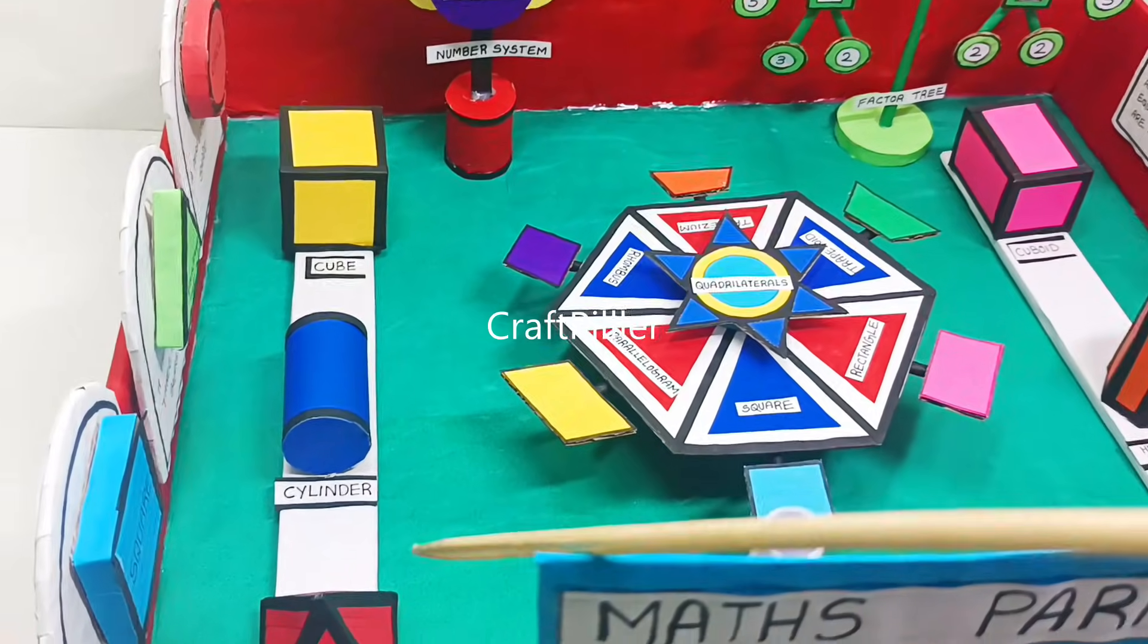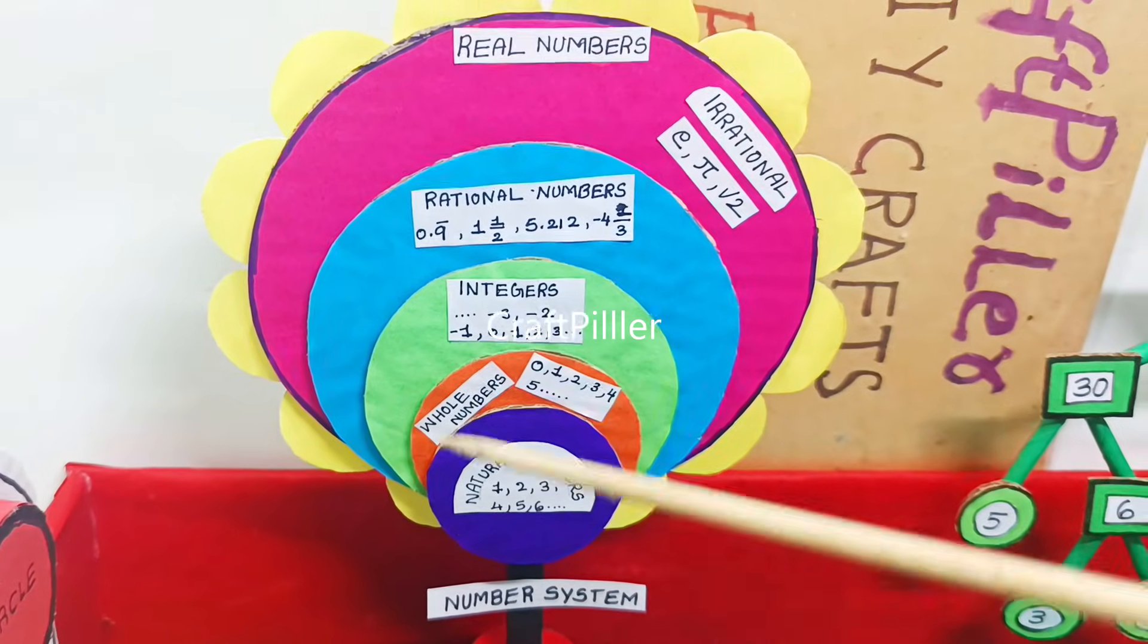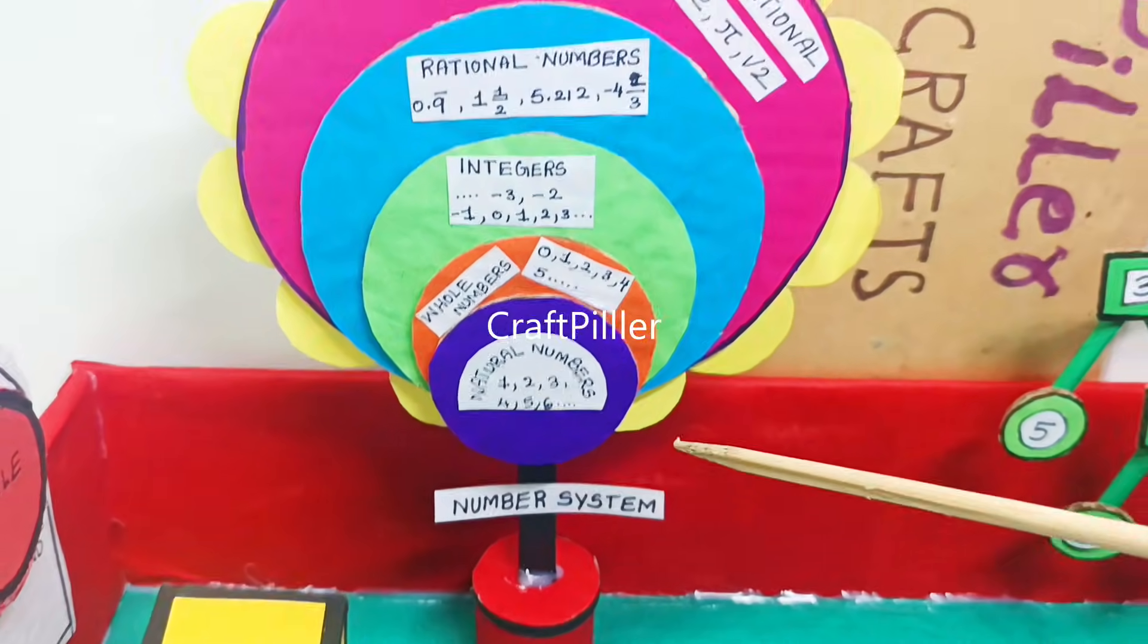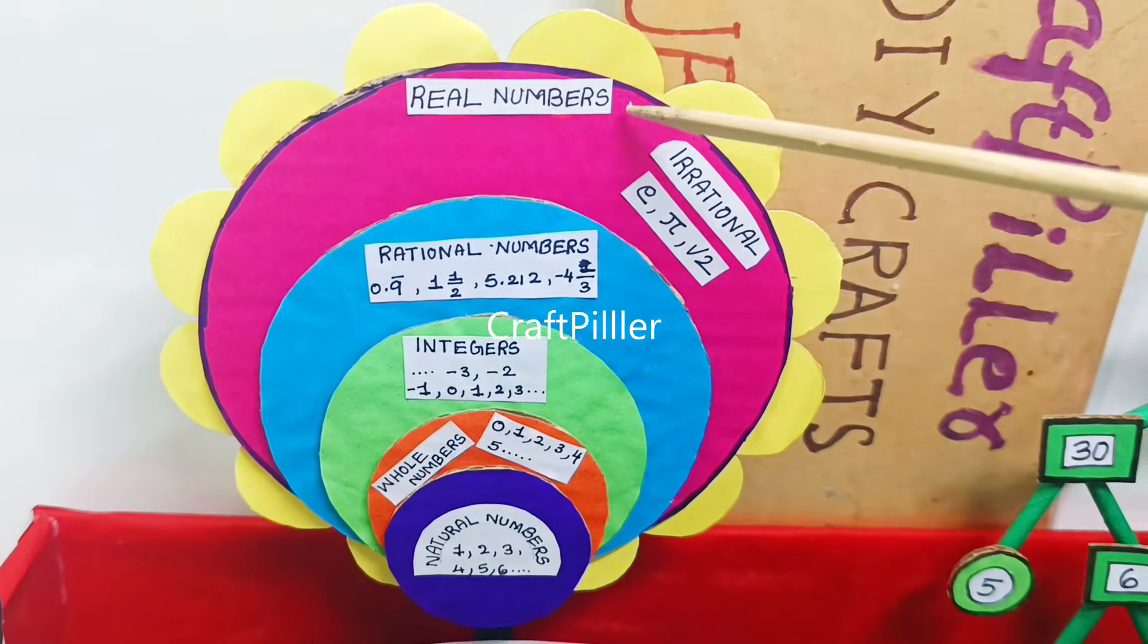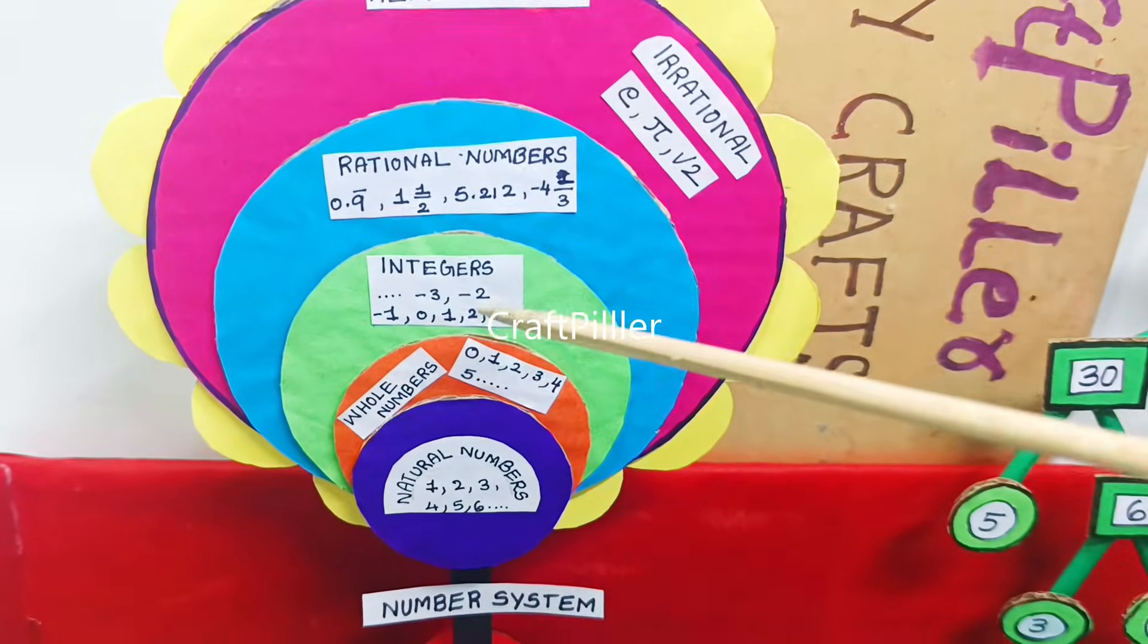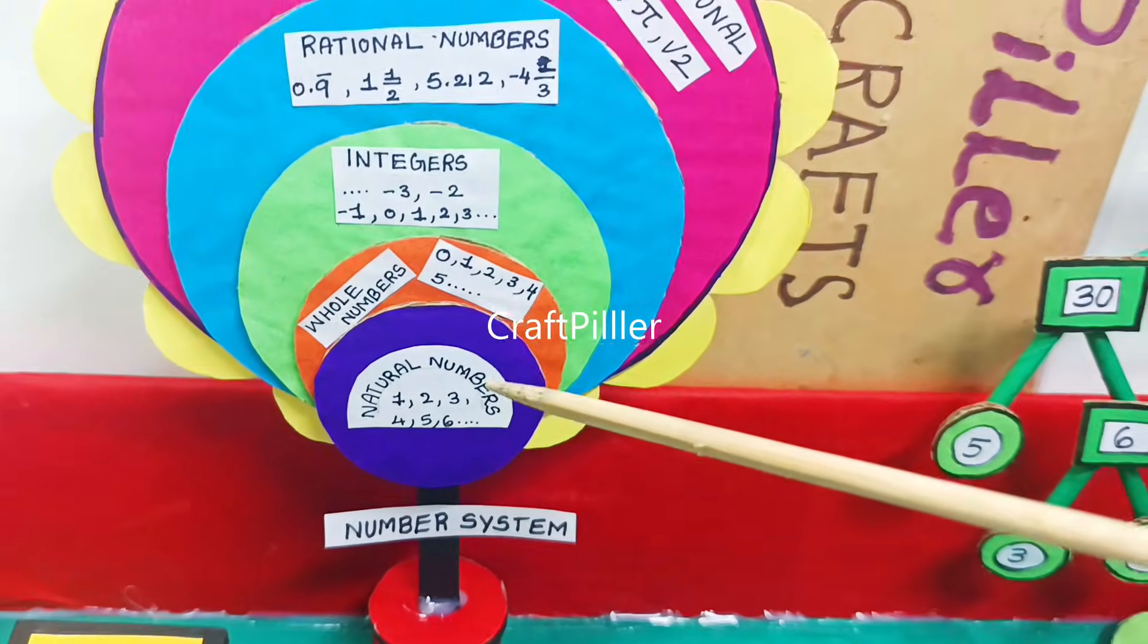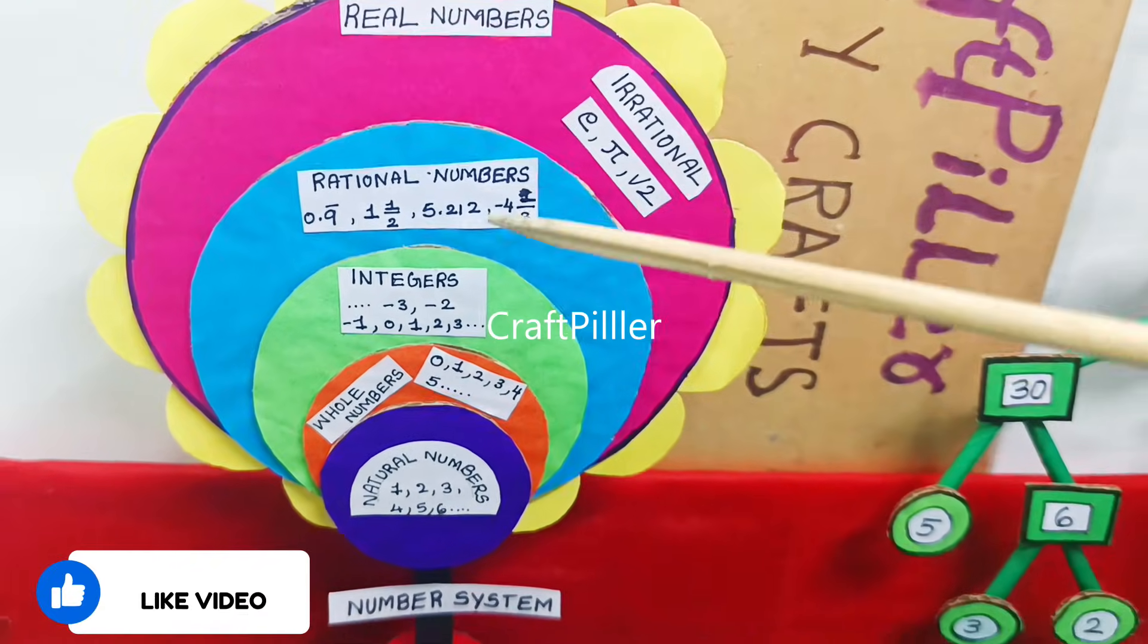The number system has been depicted in this way. Number systems have real numbers, which are further divided into rational and irrational numbers, integers, whole numbers, and natural numbers. These are the various categories we have split in the number system that we are representing.